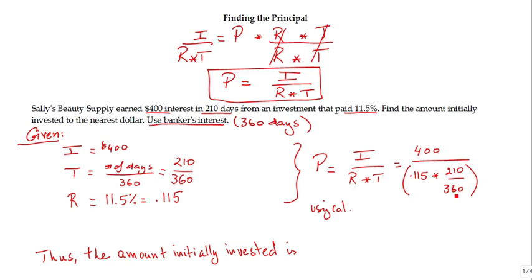This is how I will enter everything in calculator to find the right answer. We do 400, divide, open the parenthesis, 0.115, multiply by 210, divide 360, and make sure you close these parenthesis, then hit enter or equal. And this way...